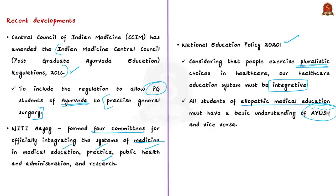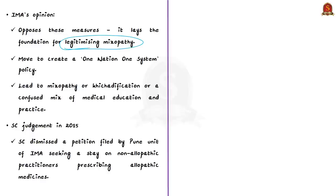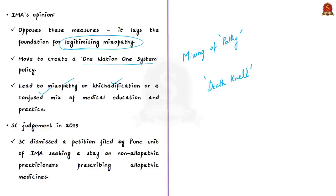This is widely opposed by the Indian Medical Association. It says that these kinds of policies lay the foundation for legitimizing mixopathy — the mixing of pathies, meaning a confused mix of different curative treatments. IMA perceives all these changes as a move to create a one nation, one system policy, claiming this move will ring the death knell of the modern medicine system and lead to what they call mixopathy, kichidification — a confused mix of medical education and practice. In 2015, the Supreme Court had dismissed a petition filed by the Pune unit of IMA, which sought a stay on non-allopathic practitioners prescribing allopathic medicines.